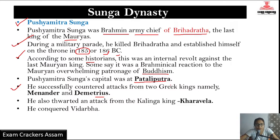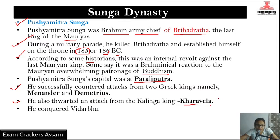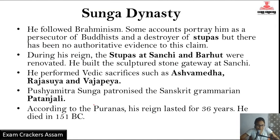Pushyamitra Sunga is the first ruler of the Sunga Dynasty. There was also a third attack from Kalinga under Kharavela, who conquered territory. He followed Brahminism and links to Brahmanical canon are noted.